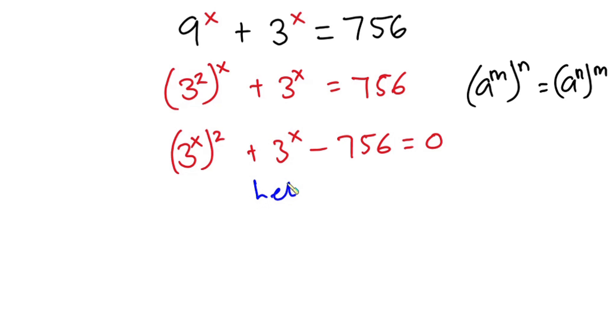Now from here I'm going to let 3 to the power x equal to a certain variable—in my case I would say m. So this equation becomes m to the second power plus m minus 756, and this is equal to zero.